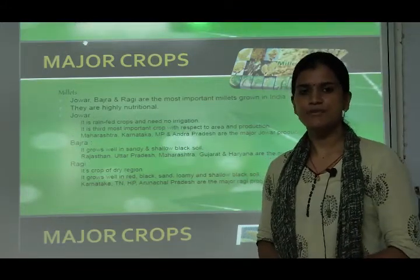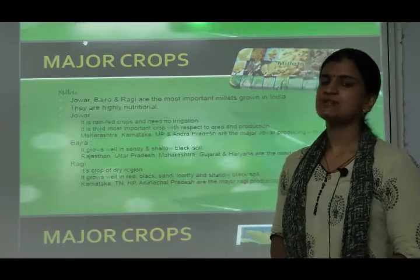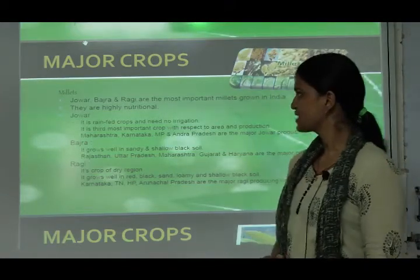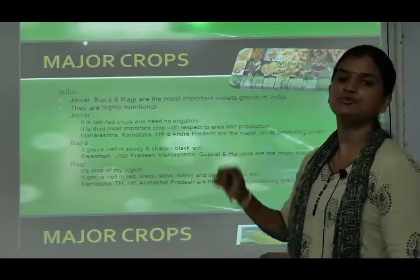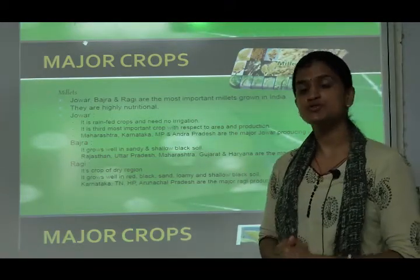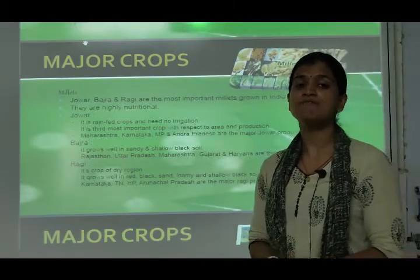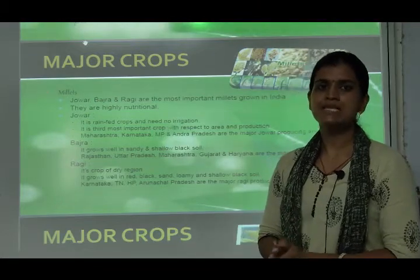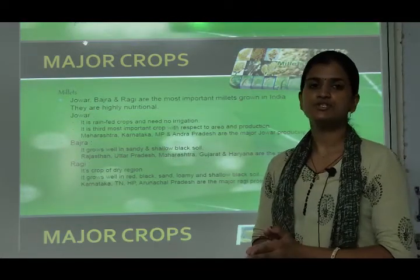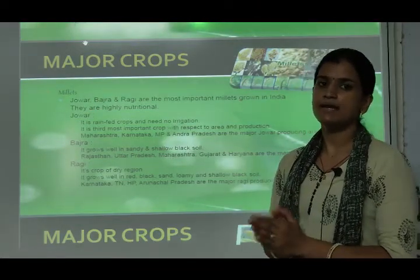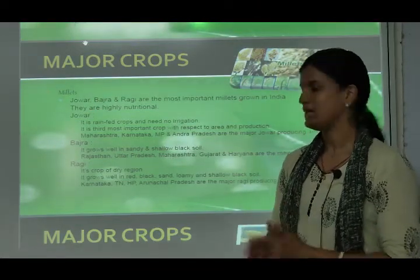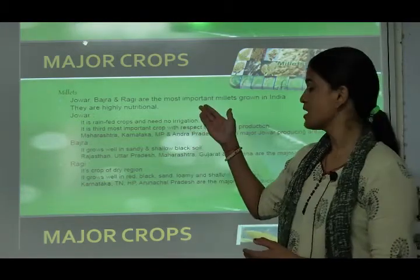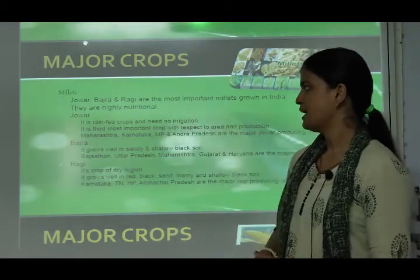Jowar, bajra, and ragi — these three crops are considered as millets. They are highly nutritional, meaning they have high proteins, fats, and other nutrients. We are going to discuss these one by one.